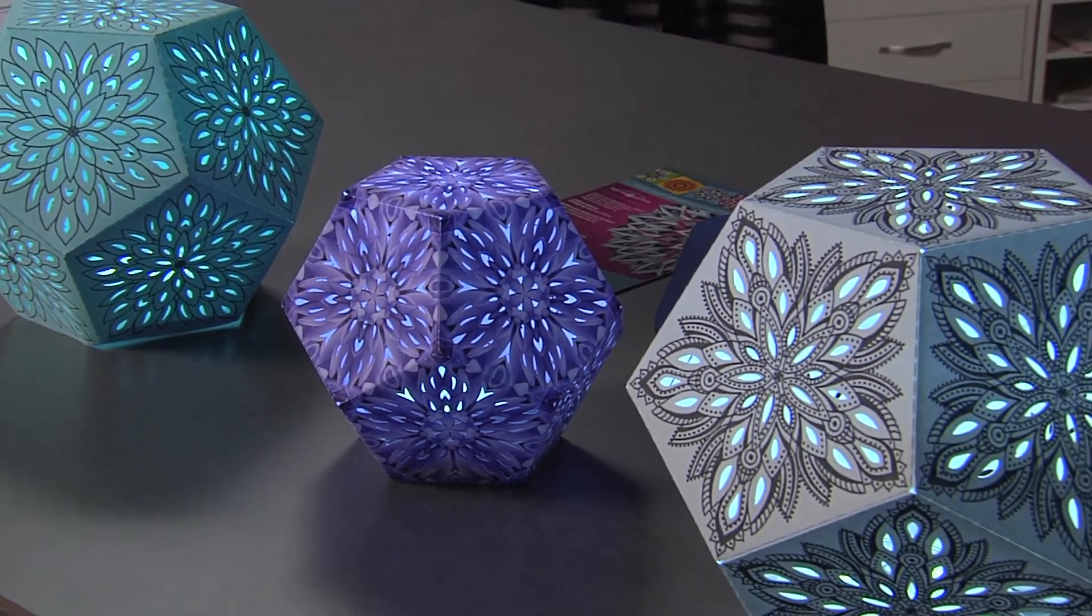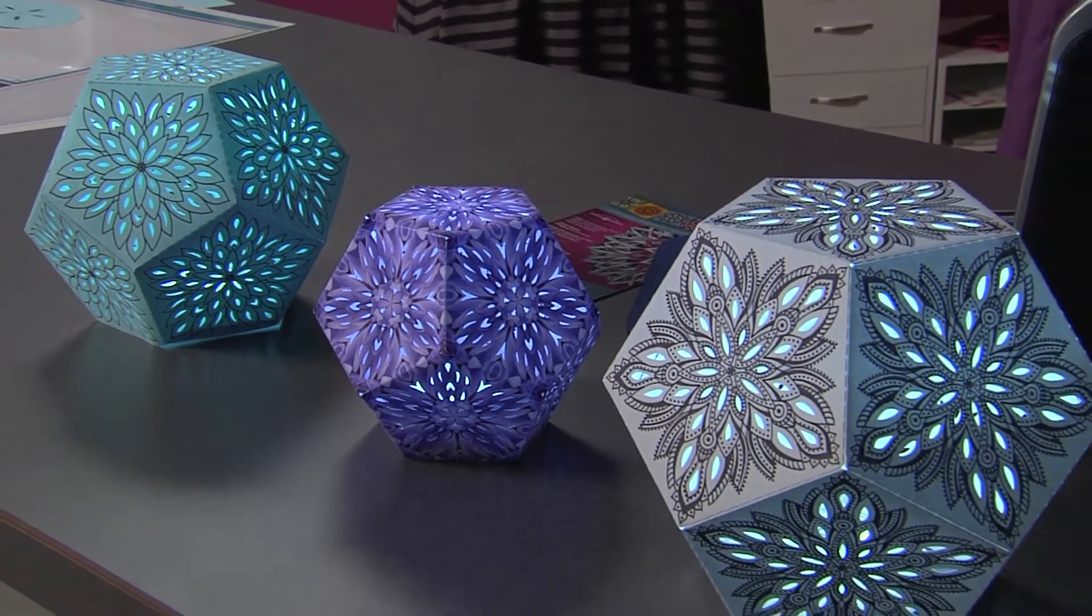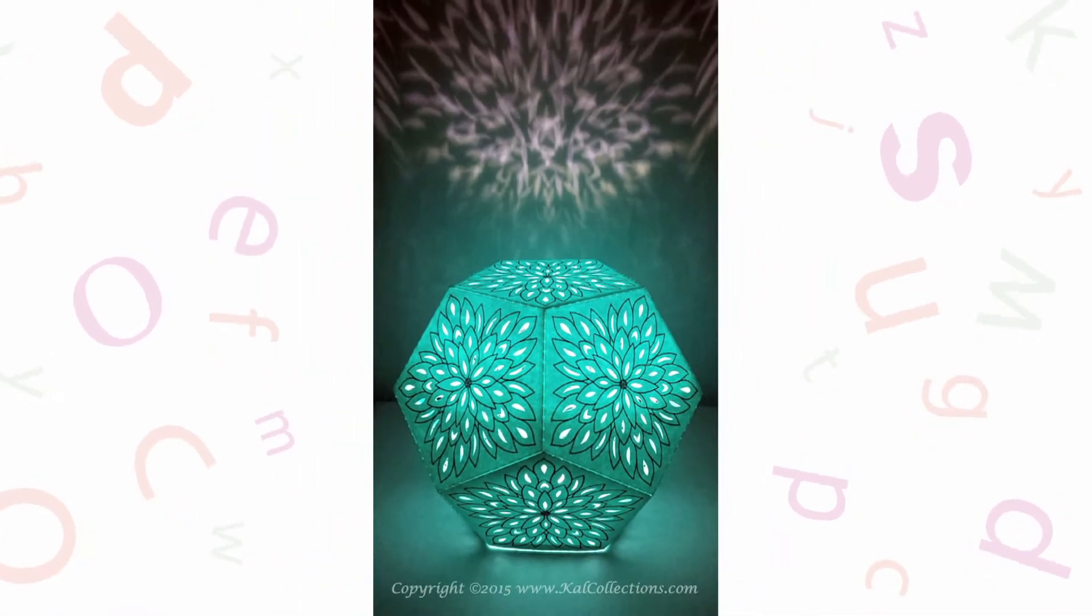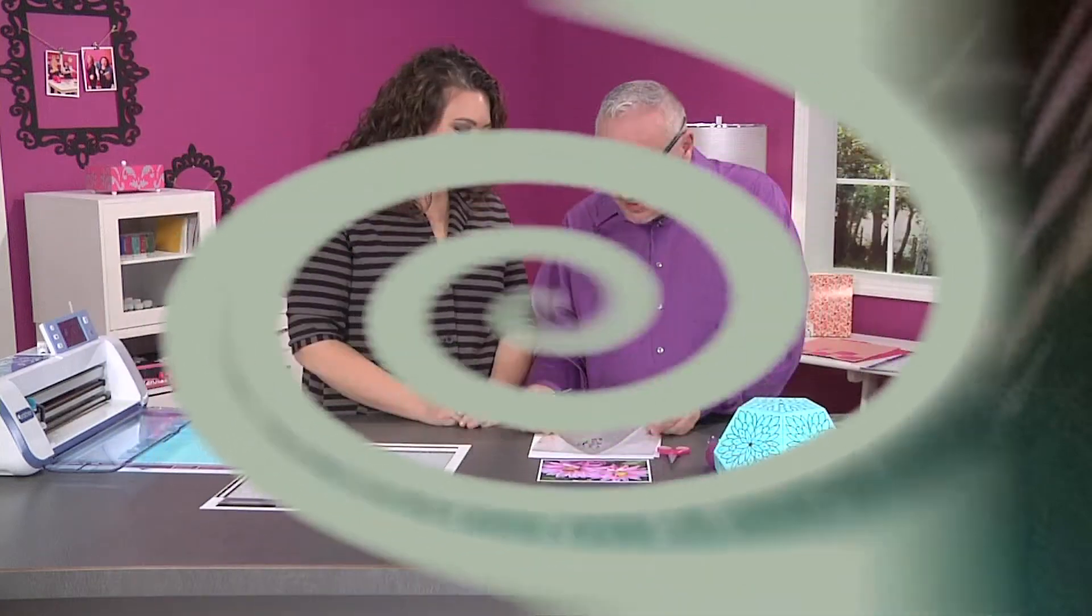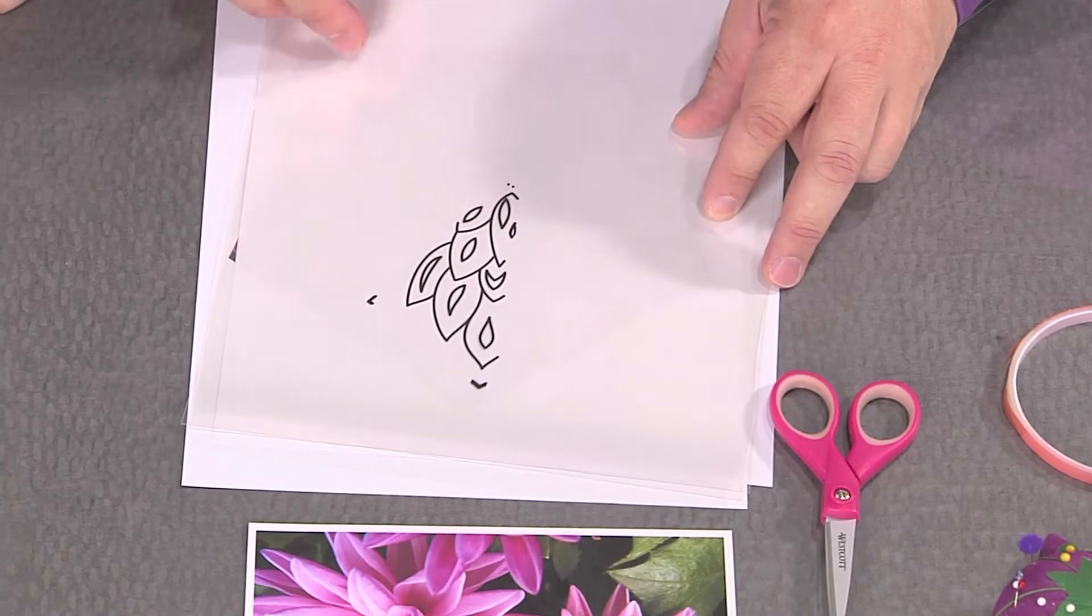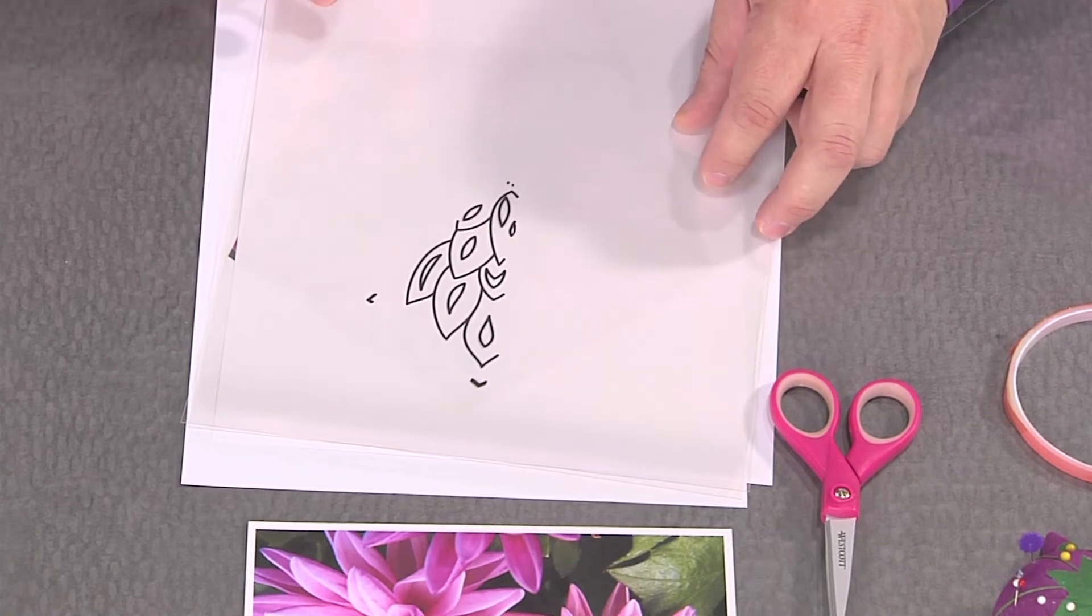And then the cut lines are separate places so the light can actually come through. Exactly. So that's what you're doing now. Again, I see you're not being precise, you're just playing around. You can see the registration marks are going to allow me to line this up again perfectly. That's why we need registration marks, because they register.